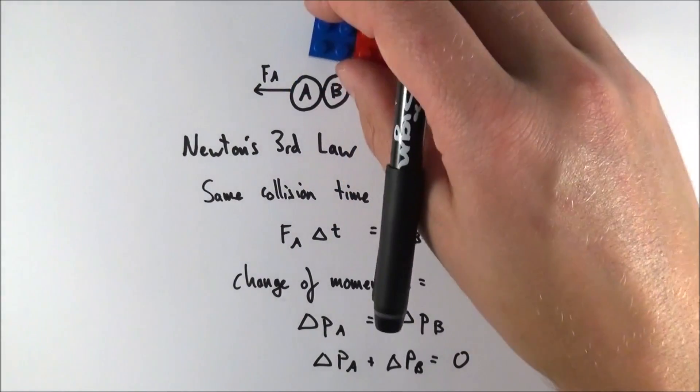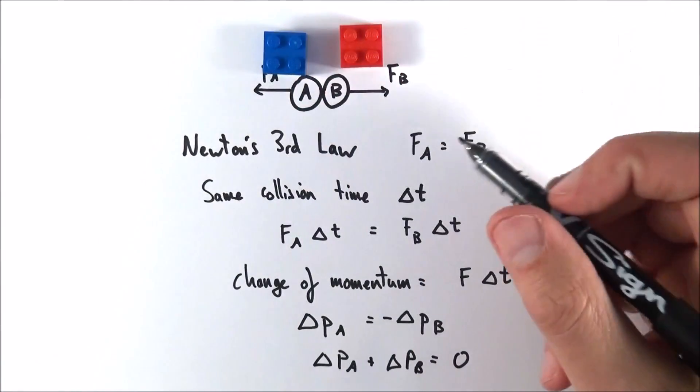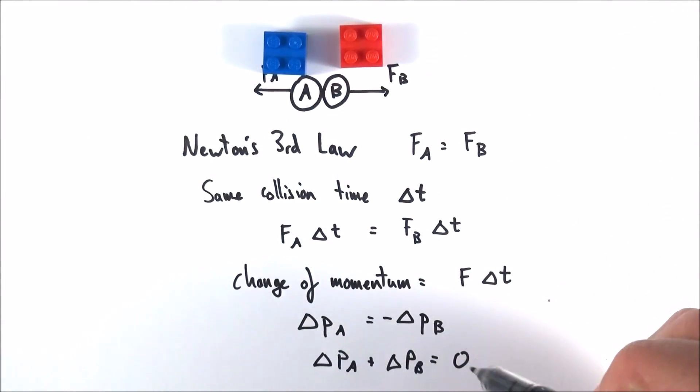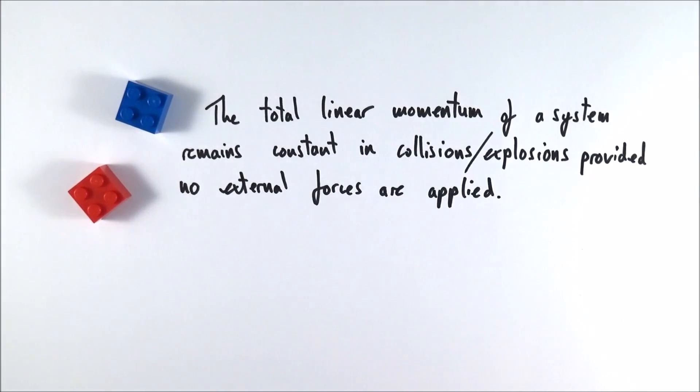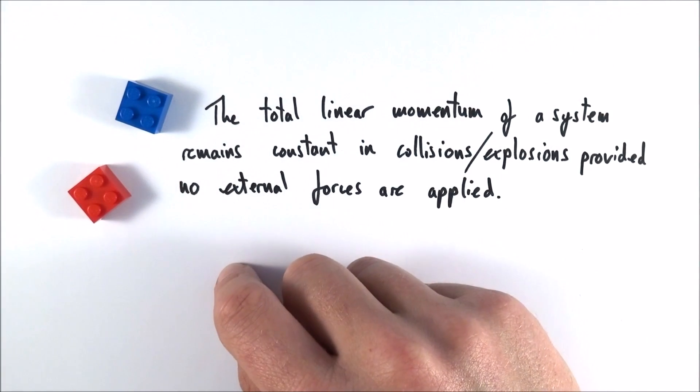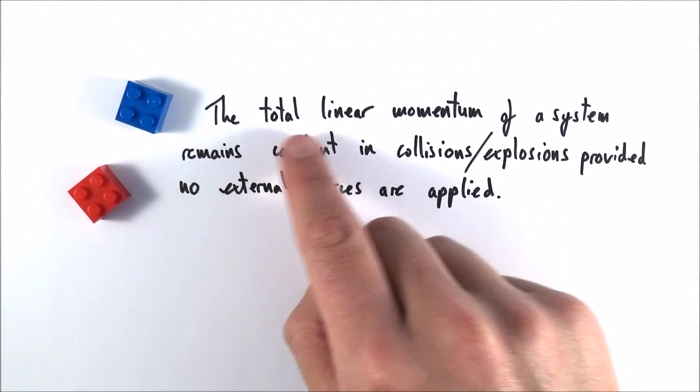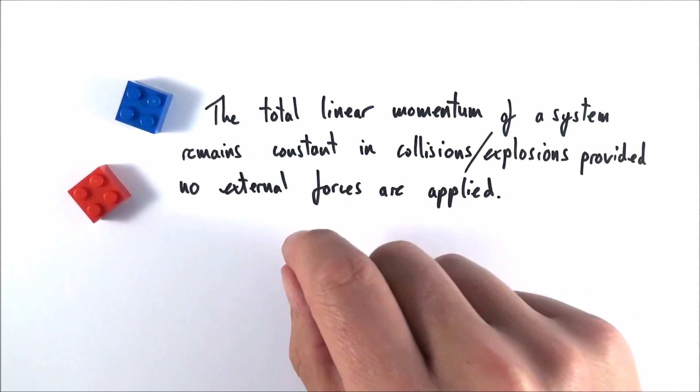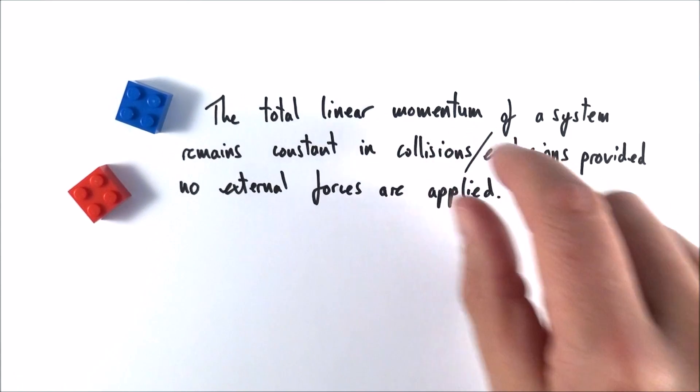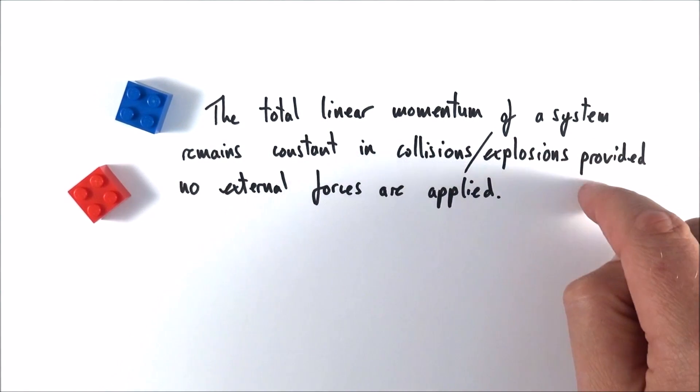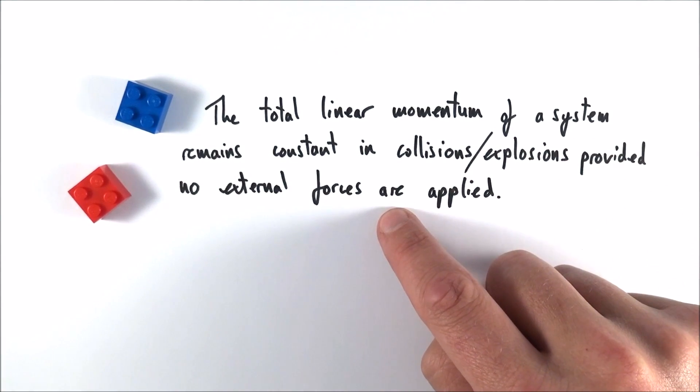So provided there are no external forces acting, if we have two objects that collide, the net change in momentum is going to be equal to zero. So the principle of conservation of linear momentum states that the total linear momentum of the system remains constant in collisions or explosions when they move apart, provided no external forces are applied.